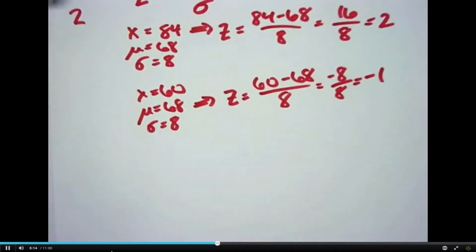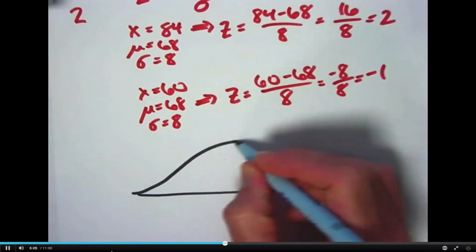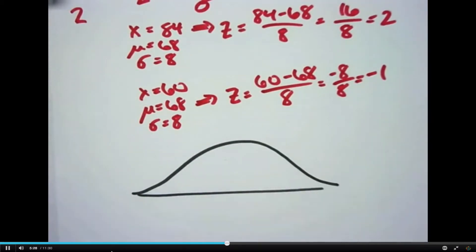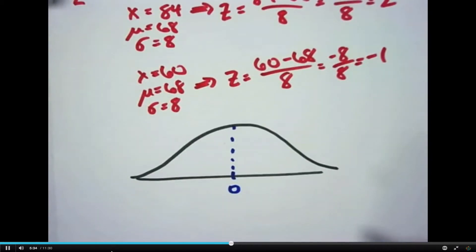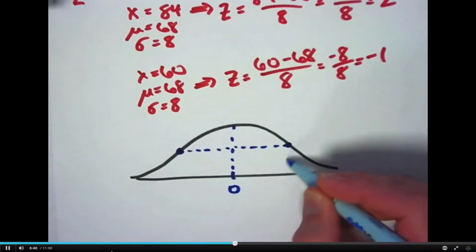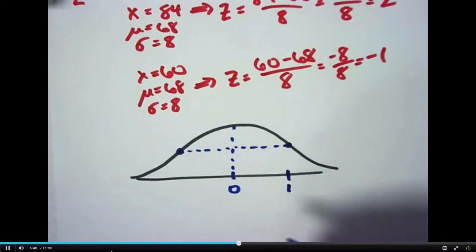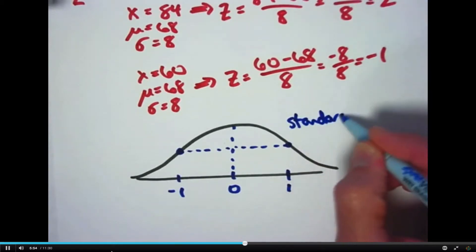And ultimately, this is referring to something called the standard normal distribution. It's a very special normal distribution. Still looks bell-shaped. It's centered at 0. Its mean is 0, and its standard deviation is 1. So this inflection point would be at a horizontal position of 1, and this one would be negative 1.